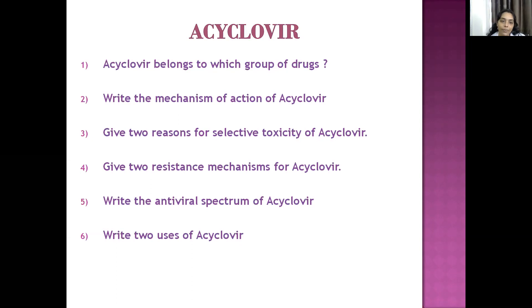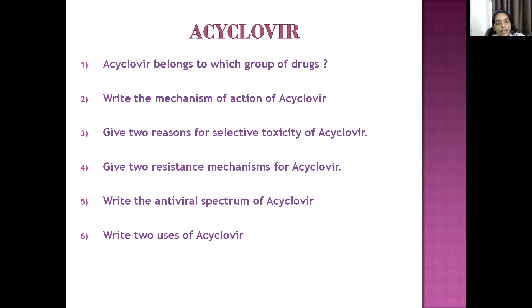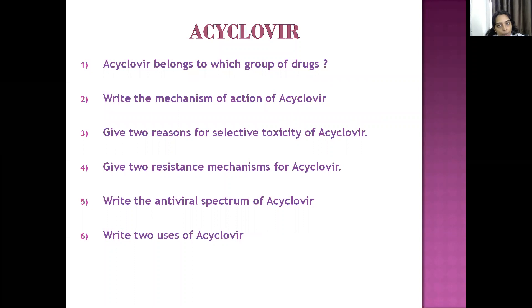For a two or four mark question, explain in detail. There are two reasons for selective toxicity: first, acyclovir gets phosphorylated to its active form only in parasite-infected cells, so it does not affect healthy host cells; second, it has greater affinity for and inhibits viral DNA polymerase more than host DNA polymerase.